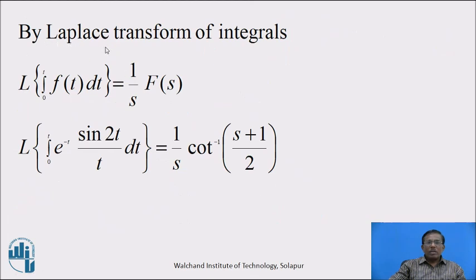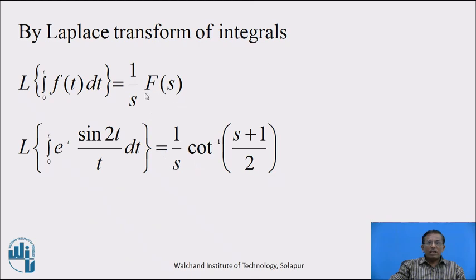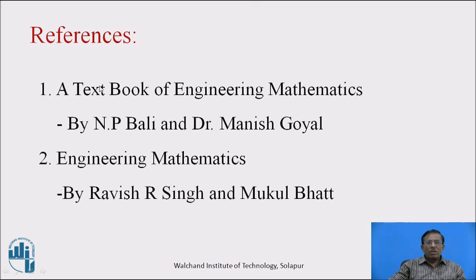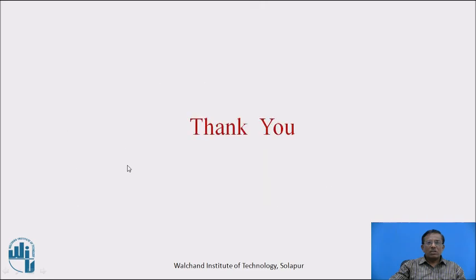By the property of Laplace transform of integrals, Laplace of integration with limit 0 to t of f of t dt equals 1 upon s into F of s. By this property, Laplace transform of integration with limit 0 to t of e raised to minus t sin 2t upon t dt equals 1 upon s into cot inverse of (s plus 1) upon 2. This is the required answer. To prepare this video lecture, I used these two books as references. Thank you.